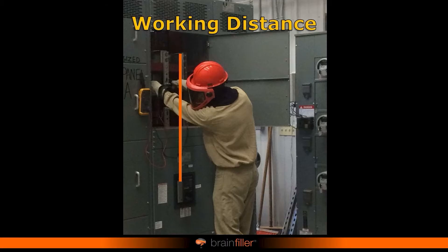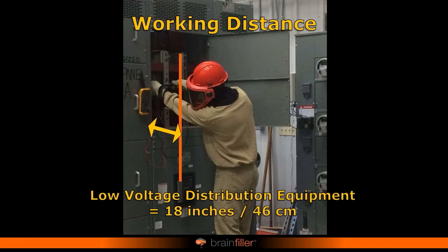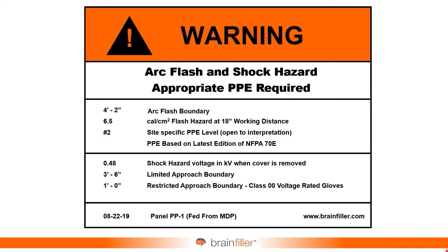Let me explain the significance of the working distance and why it is so critical. If you have arc flash labels on your equipment, they'll normally list a certain amount of incident energy — how bad could this be — and that's based on a distance, normally around 18 inches. It's stating that at 18 inches, at head and chest level where the vital organs are, this is the energy. What's critical is that if you get closer than that distance on the label, the energy goes up exponentially.